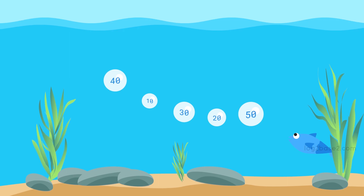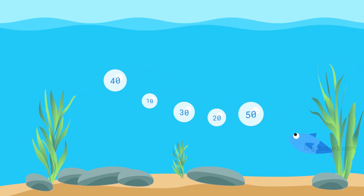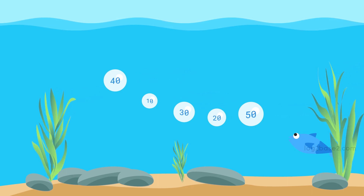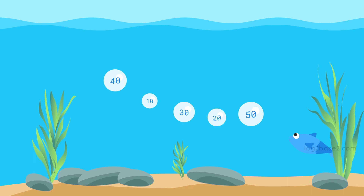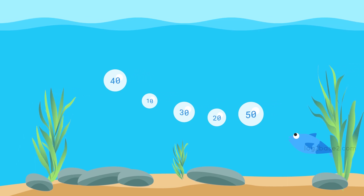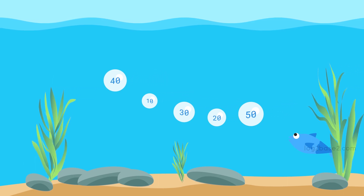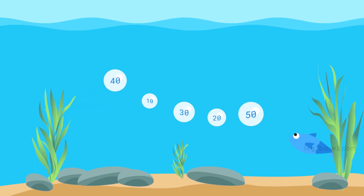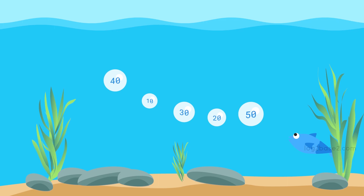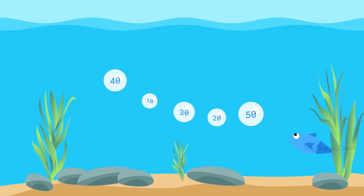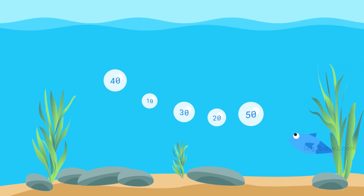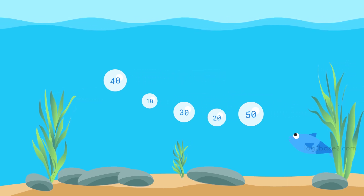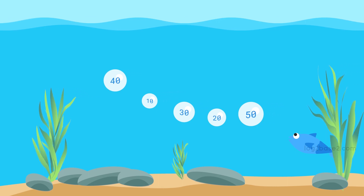Likewise, in bubble sort each iteration the largest or smallest element will get to its actual place. Here we have 5 bubbles each of different size. As we said, the largest bubble will rise first.